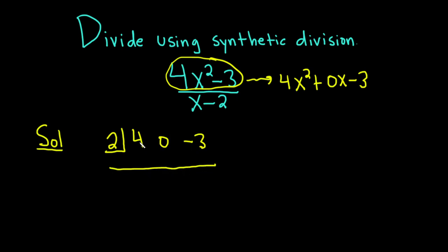The very first step is you take this number now and you bring it down, so 4. And then 4 times 2 is 8. 0 plus 8 is 8. 8 times 2 is 16. Negative 3 plus 16 is 13. Then you put a little bracket like that.